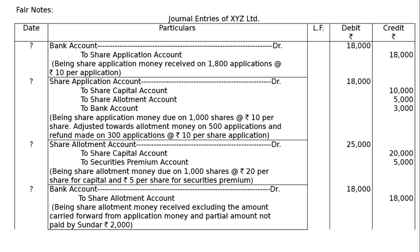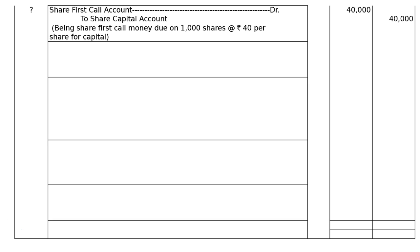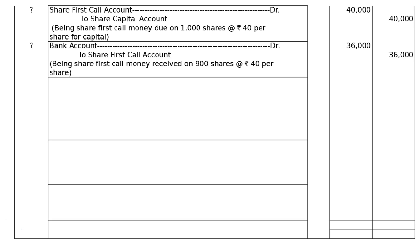The next entry will be the due entry for first call. Entry 5: Share first call account debited to share capital account — being share first call money due on 1,000 shares at Rs.40 per share: Rs.40,000. This is the due entry; we are asking for Rs.40 from 1,000 shares. The due entry is made for the full amount. Entry 6 (receipt): Bank account debited to share first call account — being first call money received on 900 shares at Rs.40 per share (100 shares held by Sundar not received): 900 × 40 = Rs.36,000.